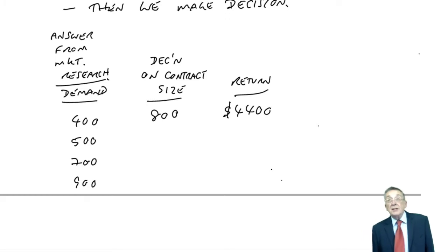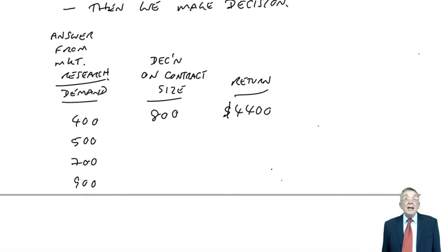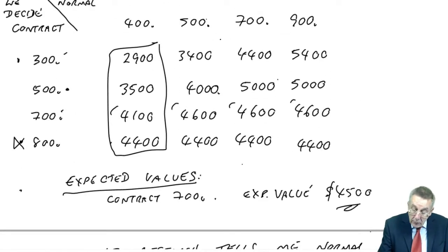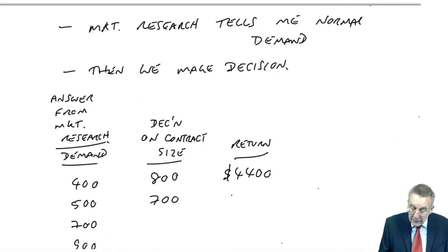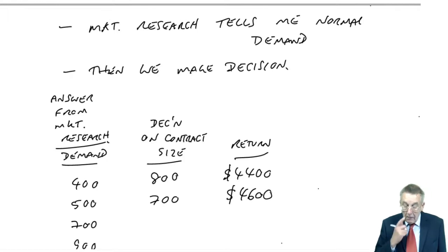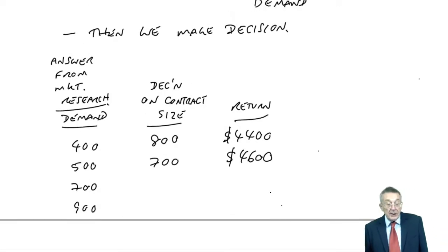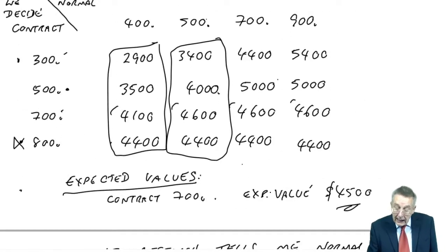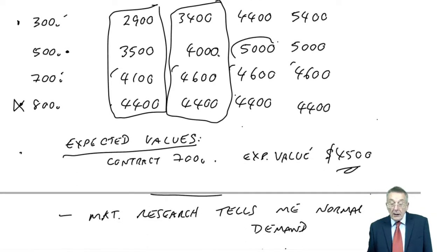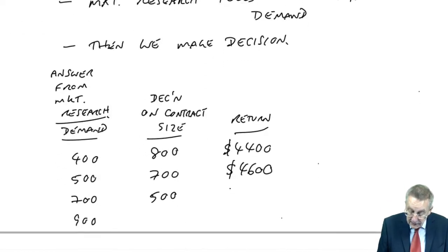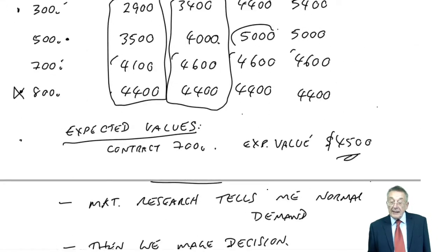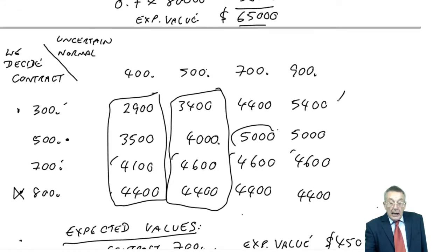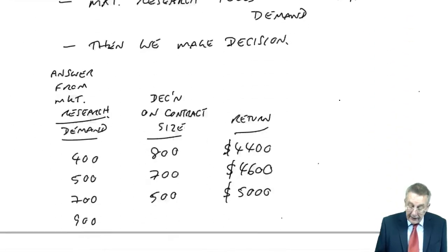On the other hand, if they come back and tell me it's going to be 500 — perfect research — I'll go for the 700 contract size and I'm guaranteed to make 4,600. Similarly, if they've discovered demand is going to be 700. And finally, if they tell me demand is going to be 900 a week, I'll contract for 300, giving the highest return at 5,400.